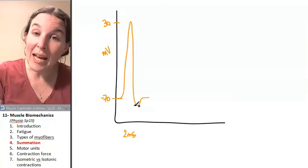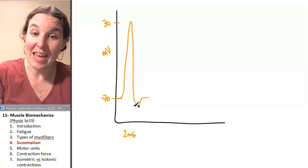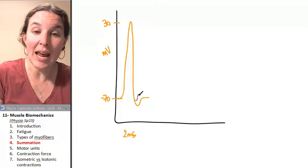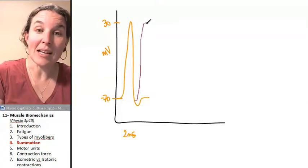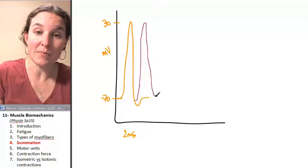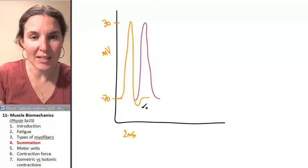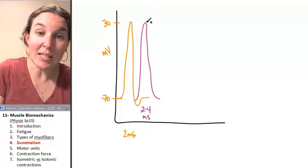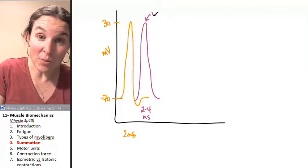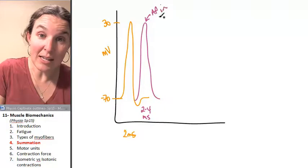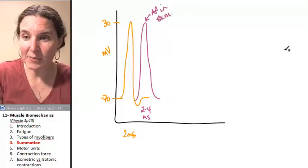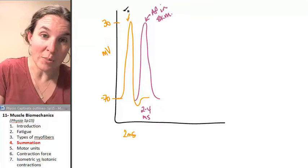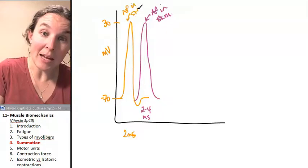So shortly after the action potential ends, watch and be amazed, you're going to get an action potential in the skeletal muscle. And this also takes two to four milliseconds. So this is an action potential in skeletal muscle, and this one was my action potential in my somatic motor neuron.